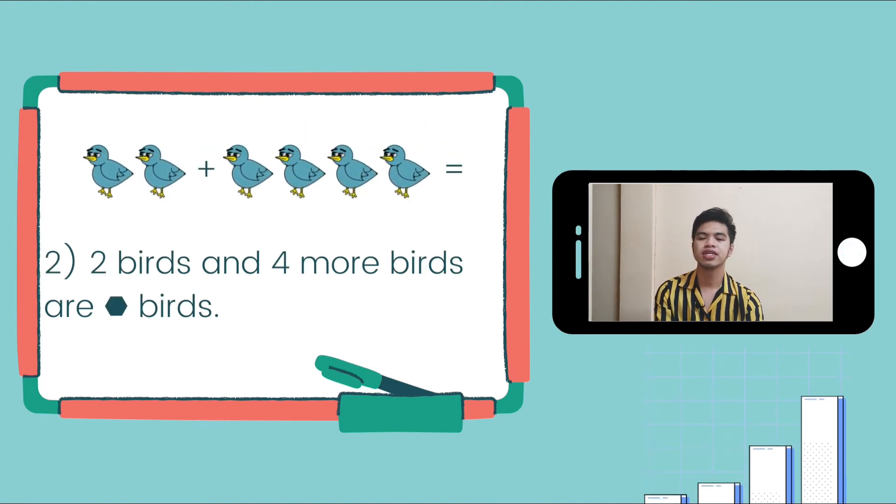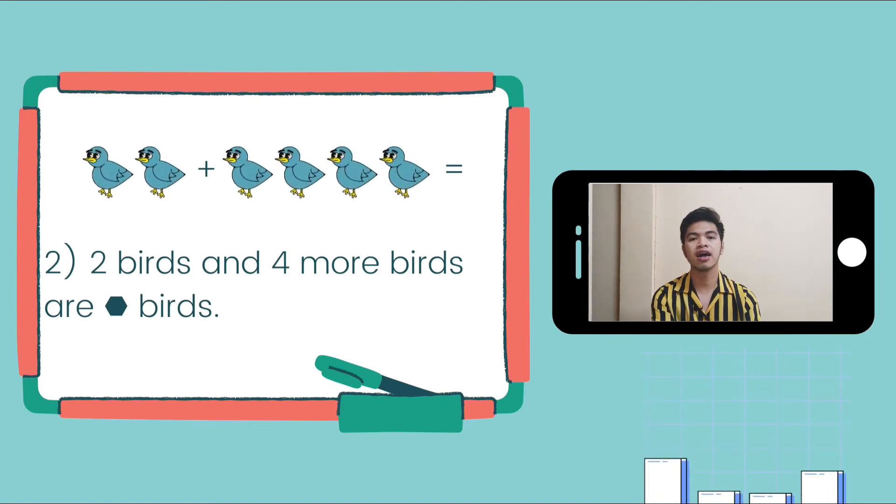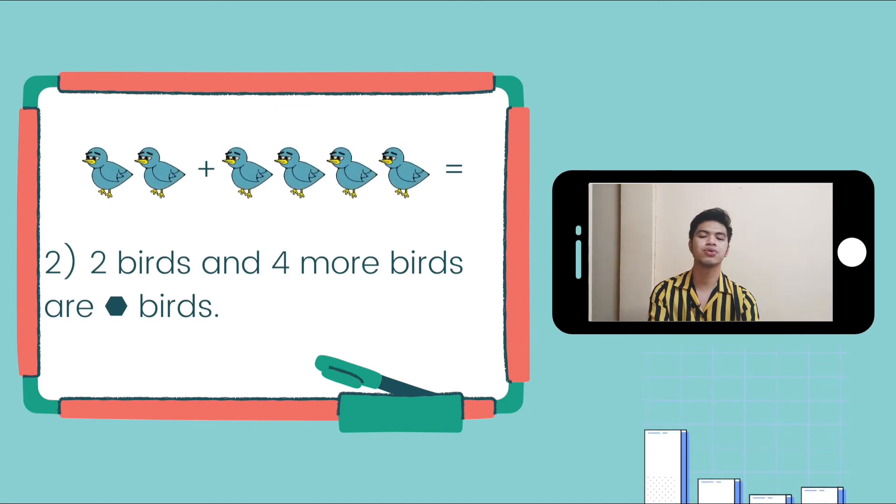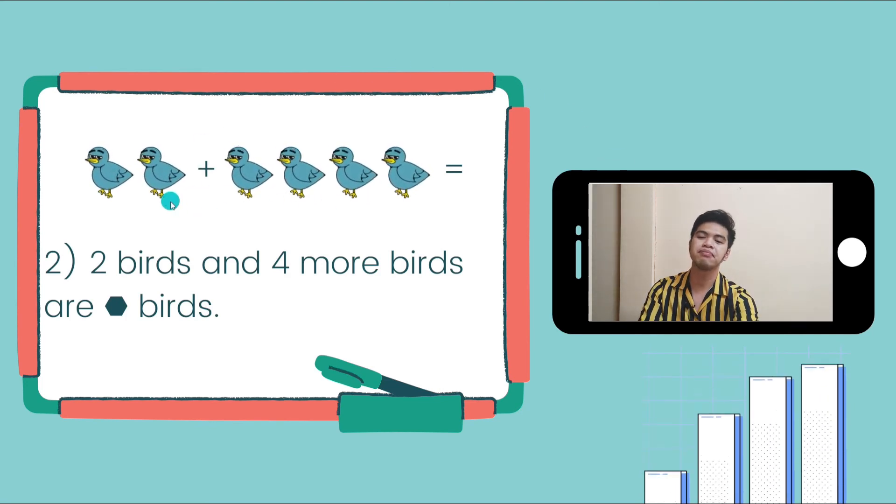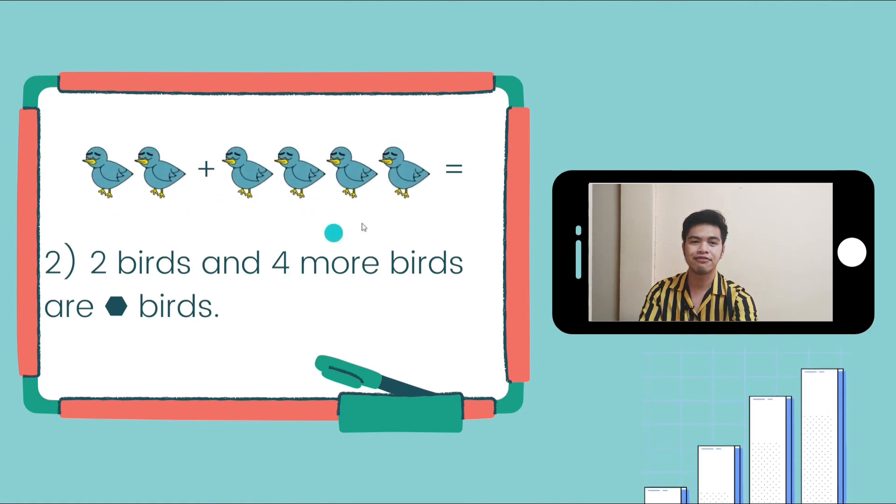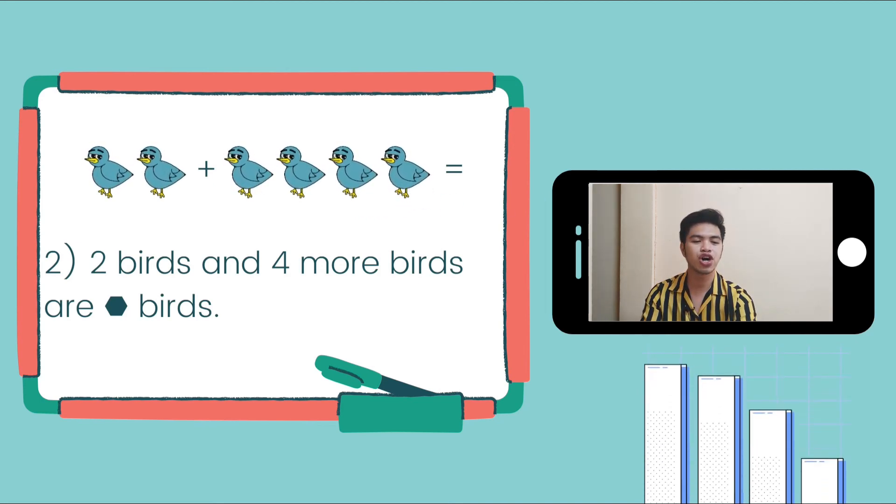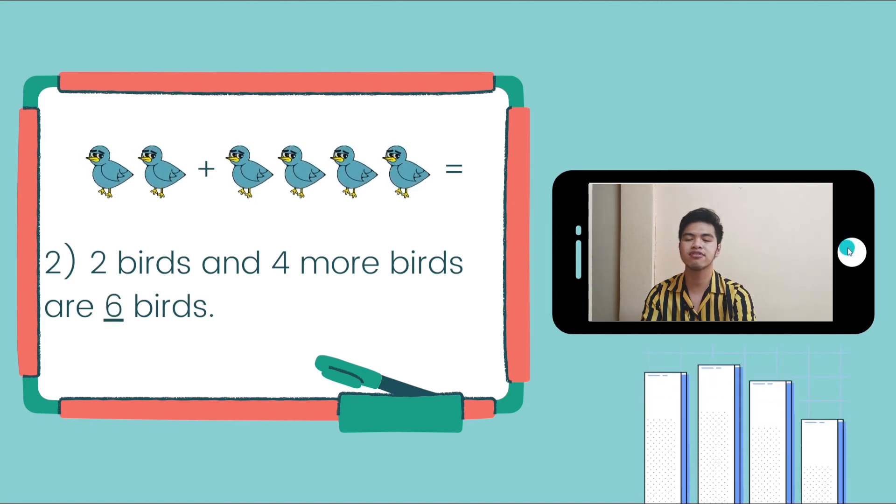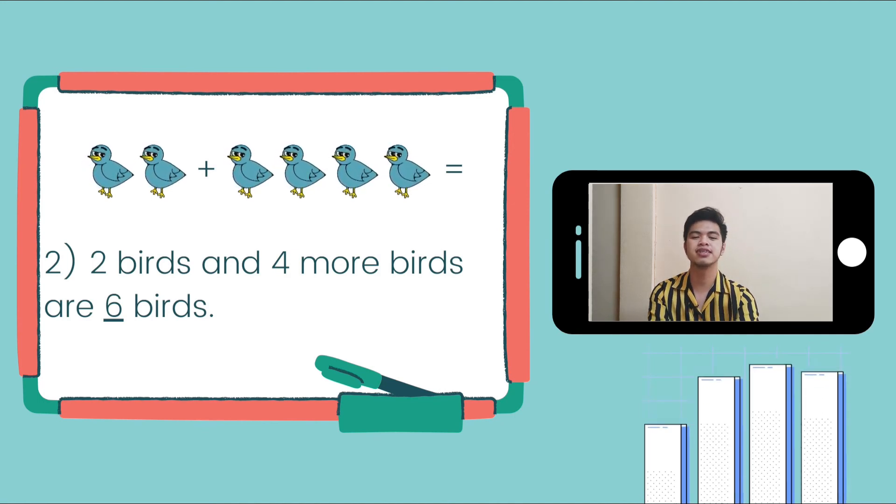Number 2. 2 birds and 4 more birds are blank birds. We're going to count 2 and 4. Let's add them. One, two, three, four, five, six. There are 6 birds. Therefore, we're going to write 6 inside of the hexagon. 2 birds and 4 more birds are 6 birds. Very good.